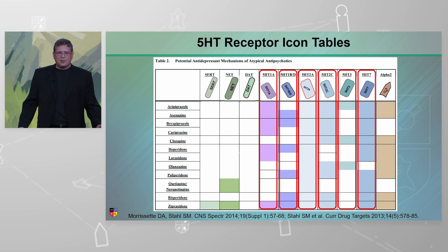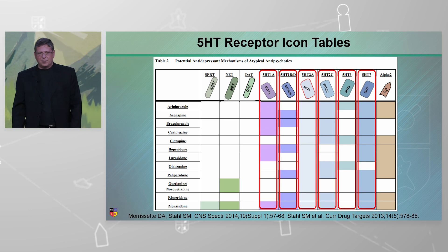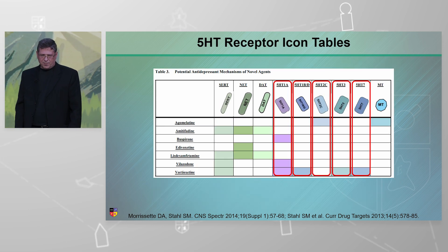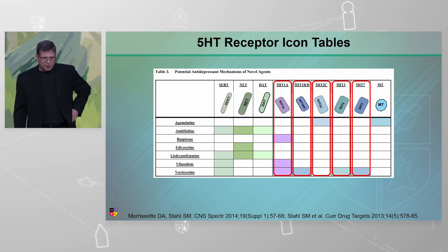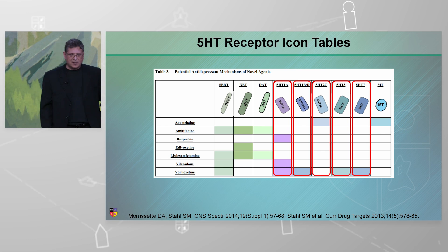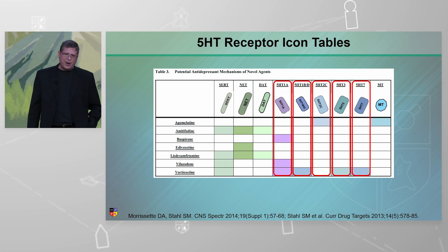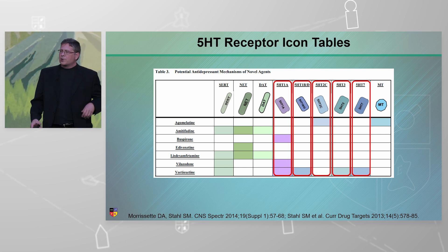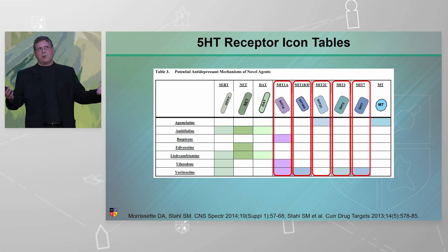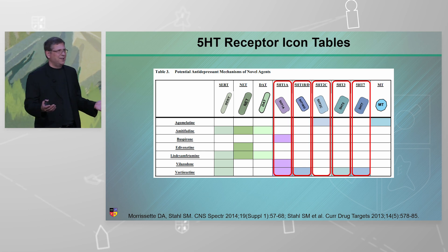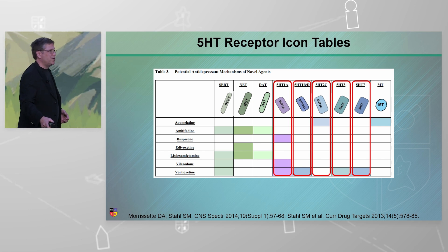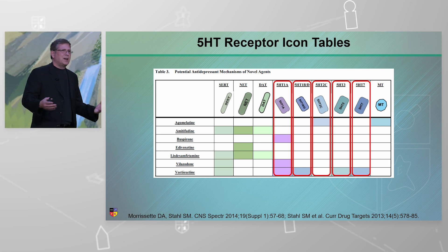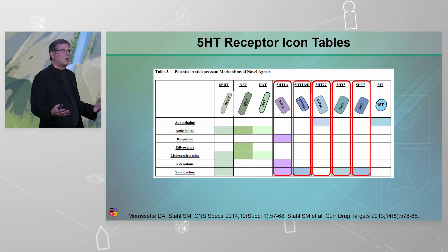There are just easier ways to do these things. And here's some of the one-off products — your buspirone's in there, lisdexamfetamine, the sparies are on the bottom. So you can make this easier on yourself. Maybe you commit to one drug a month — pull this table up and pseudo-memorize it, and then you start to get a little bit more.